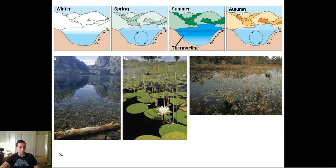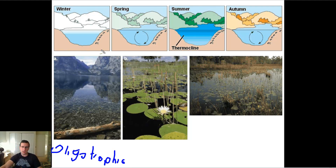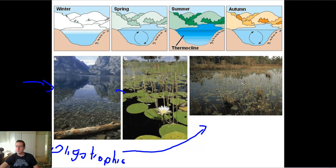We call this early stage an oligotrophic lake — that means there's not enough food yet for everybody, so it's a young lake. As more and more runoff gathers into the lake, it starts accumulating more and more nutrients and heading toward the other end of the spectrum, where the lake is so full of nutrients that it's covered with vegetation, lots of algae, and darker water.